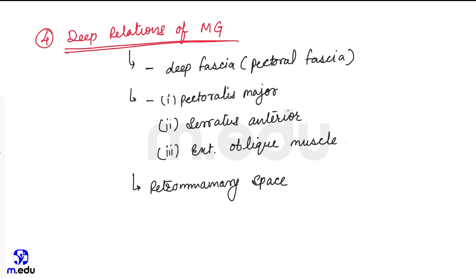Now the fifth heading: structure of breast. Three structures: first one is skin, second one is parenchyma, and third one is stroma.